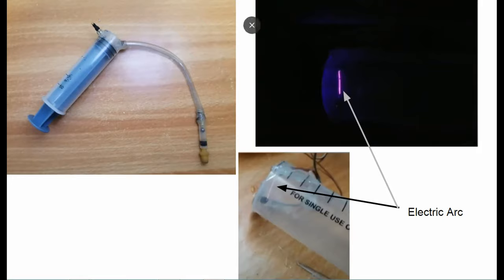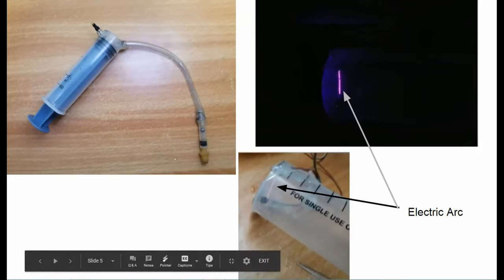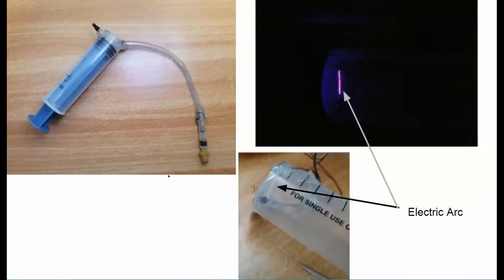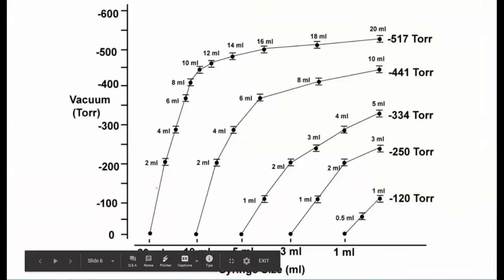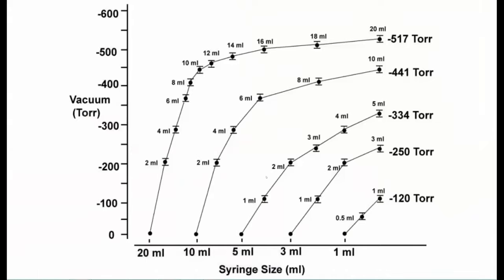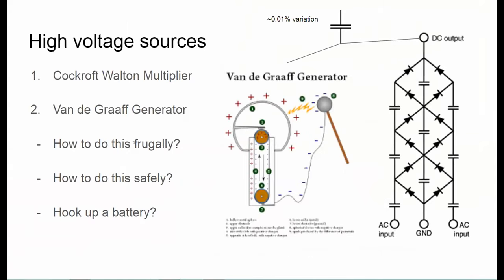That's the stuff Samir had done — one of the most frugal things we've achieved so far. We even graphed how we can get different amounts of vacuum with different syringe sizes, which you can find on our Notion page. Moving on to high voltage sources: some of our initial ideas are using different kinds of generators and multipliers like Cockcroft-Walton or Van de Graaff. Fabian had an idea to connect a capacitor at the end of the generator to get around 0.01% variation in voltage, since we need a very stable source.